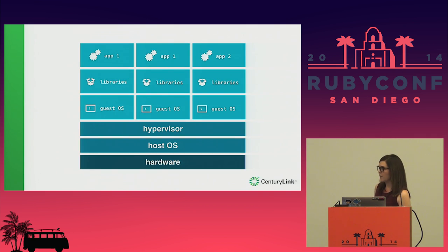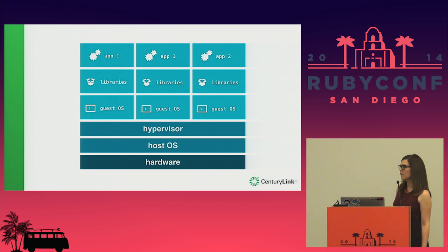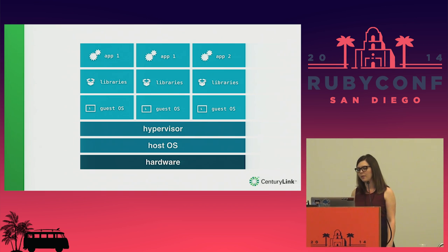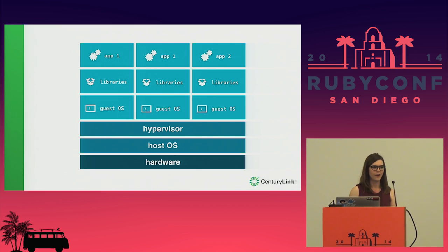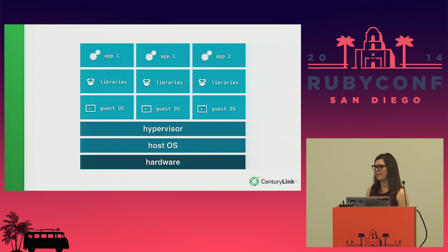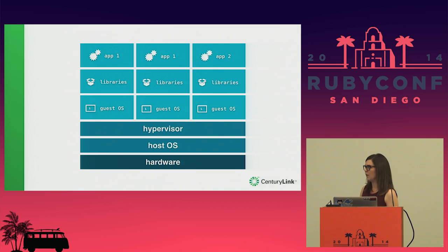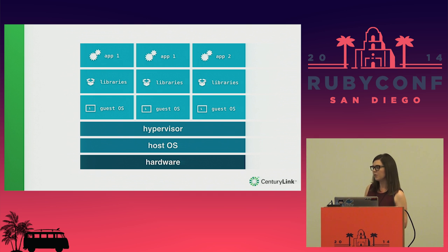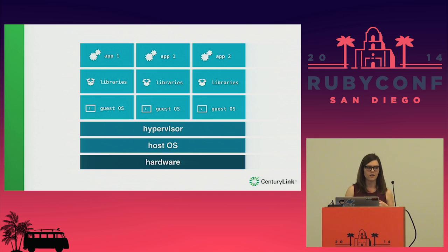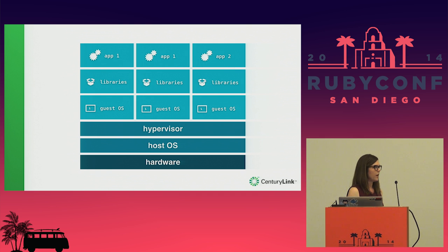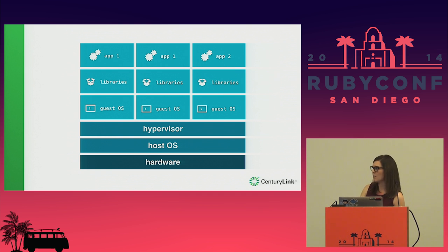Here's an example of a pretty typical virtual machine setup. We have two different services: app one, with two instances, and app two. They're in virtual machines. On each machine there's the library, a guest OS, a hypervisor underneath all of those, sitting on a host OS and sitting on top of hardware.